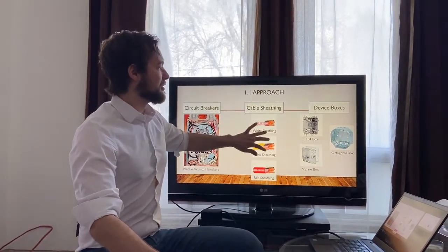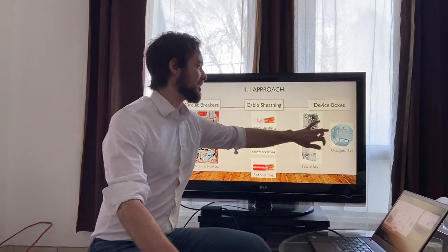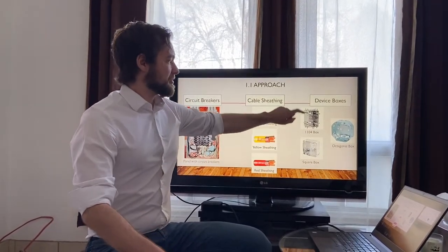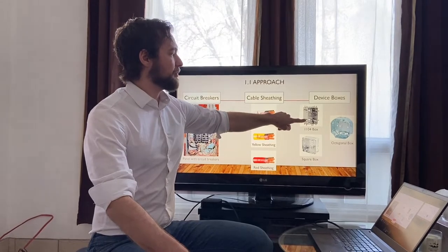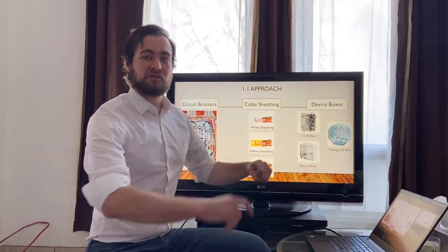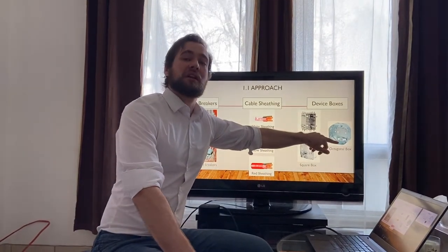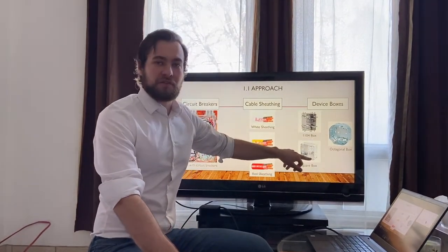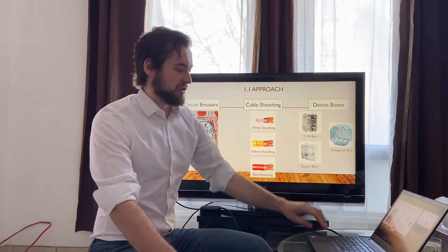So from the panel, we'll be leaving with these cables and reach their destined device boxes. So we've got three different boxes. We got the 1104 which is used to house the junction point between the cables and outlets or switches. The octagonal box for those of lighting fixtures and the square box for that of the plug of the electric range.